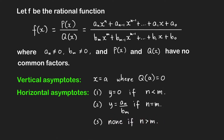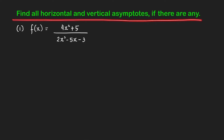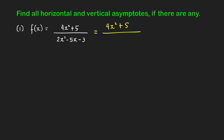Let's look at some examples. We'll find all horizontal and vertical asymptotes if there are any. For the first function, it's good practice to first factor the numerator and denominator to check for common factors and to find the zeros of the denominator. The numerator 4x squared plus 5 cannot be factored further. The denominator factors as 2x plus 1 times x minus 3, since the sum of the cross terms gives negative 6x plus x equals negative 5x. There are no common factors between numerator and denominator.